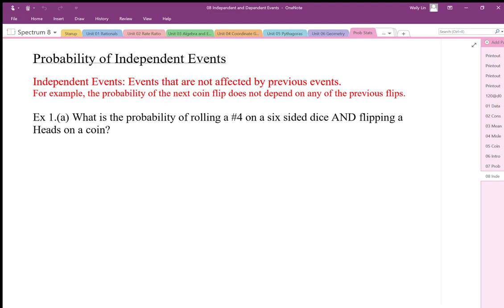Okay, so for the example, the probability of the next coin flip does not depend on any previous coin flips. A dice roll, coin flip - these are what we call independent events. One does not affect the other. So what's the probability of rolling a number four on a six-sided dice and flipping a heads on a coin? Well, this is a two-event probability, so we can draw our sample space out for this.